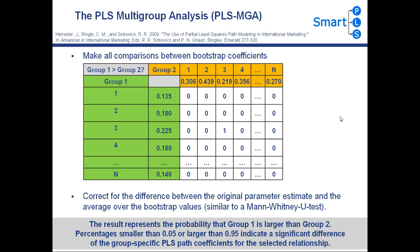When making these comparisons, we again check if Group 1 is larger than Group 2. If the bootstrapping coefficient of Group 1 is larger, we plug in a 1; otherwise a 0. Then we count the number of 1s and divide by the total number of comparisons — 25 million in our example — to obtain the probability that Group 1 is larger than Group 2. However, in PLS-MGA we need to correct for the difference between the original parameter estimate and the average over the bootstrap values. This is similar to a Mann-Whitney-U test. Details on the computation can be found in the publication by Henseler, Ringle, and Sinkovics.